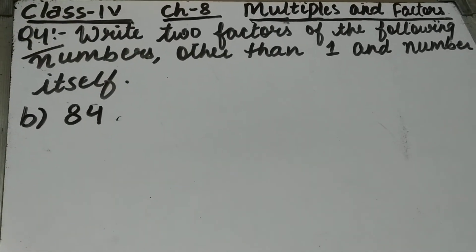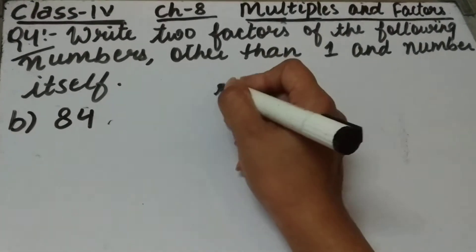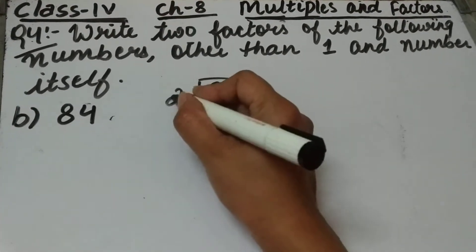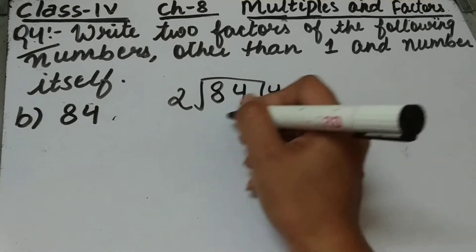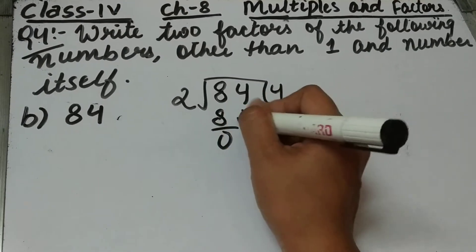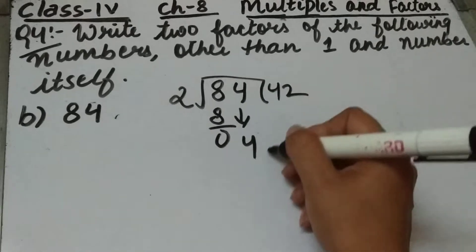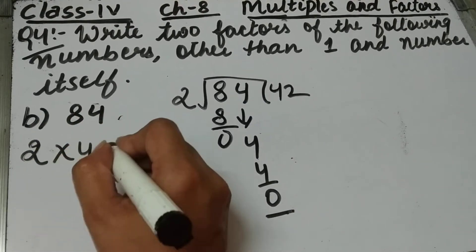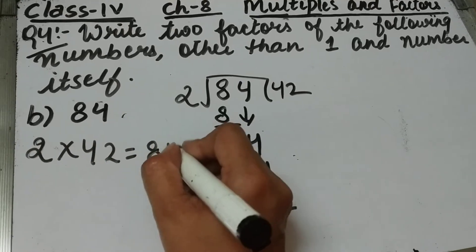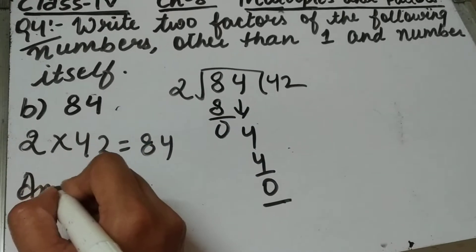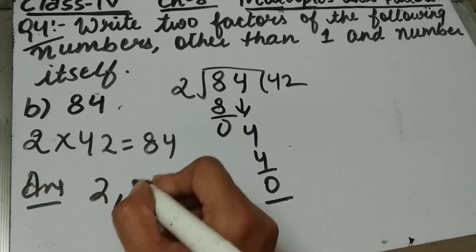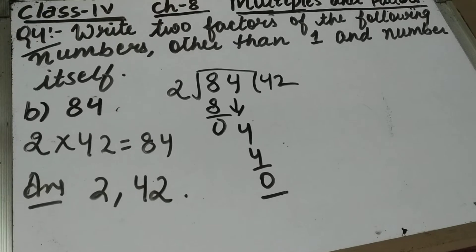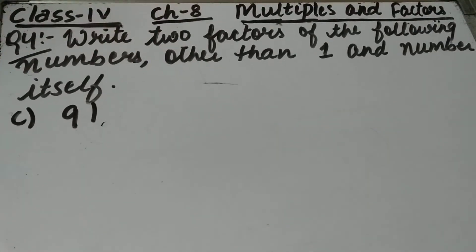Part B is 84. First of all we will check if 84 is divisible by 2 or not. 2 fours are 8, remainder 0, bring this 4 down, 2 twos are 4. So 2 times 42 is 84. The 2 factors of 84 are 2 and 42.